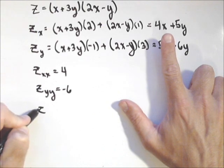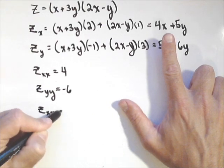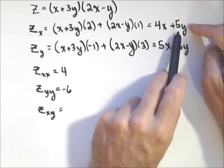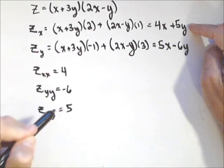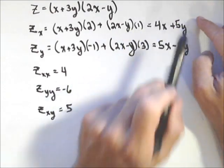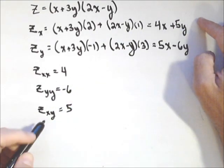Now we always should do our mixed partials and make sure they come out to be the same. We'll start with z sub xy. The derivative of that is 5. Because this is a constant, so its derivative is 0. Derivative of 5y with respect to y is 5.